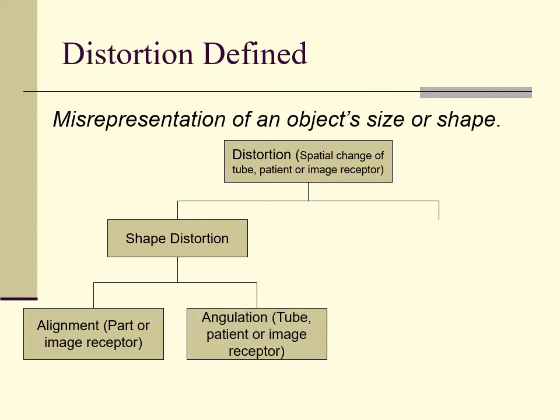Additionally, angulation of the tube, patient, or image receptor can cause distortion of an image. This is a type of shape distortion that is often used to separate superimposed structures, provided that the distortion of the part of interest's shape is not overly distorted.